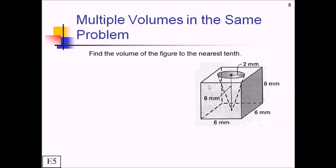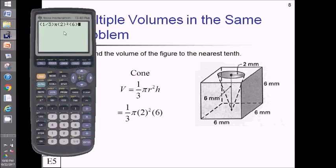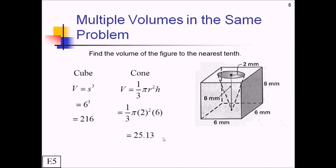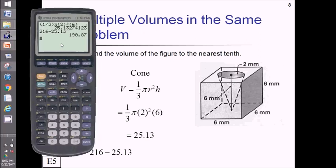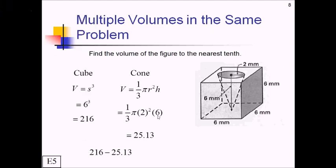This next problem is kind of interesting. We're given this cube with a cone kind of hollowed out of it. And we want to find the volume of the remaining shape. Pause the video and see if you can give this one a whirl. So you need to find two volumes in this one. First we need the volume of the cube. That's just going to be s cubed. S is going to be 6. So 6 cubed gives us 216. Then we need the volume of the cone. The cone, again, that's going to be one-third pi r squared h. R in this case is going to be 2. And then h is going to be 6. So plugging all that in, we're going to end up with about 25.13. Now what do we have to do with these two volumes? Well, we took this cone out of the cube. So that means we're going to have to subtract. And that gives us about 190.87. And that's going to be cubic millimeters.